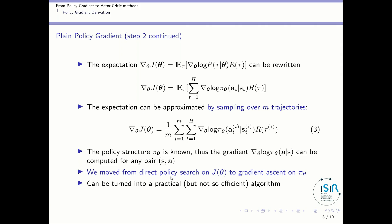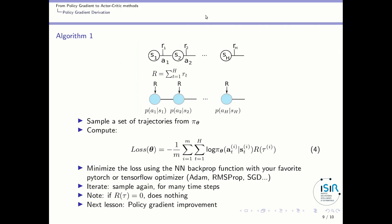This gradient can be turned into a practical algorithm, though as you will see in the next videos, it is not so efficient. The algorithm collects m trajectories: starting from a first state, performing a first action, taking a first reward, and so on. For each trajectory, we compute the sum of rewards along the trajectory, then compute the log probability of the action given the state under the current controller, multiplied by the global reward. This gives you the computation of a gradient.